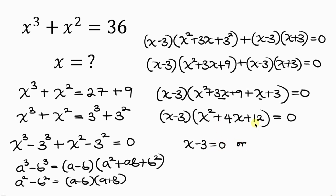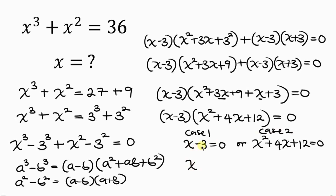We now have two cases. Case 1: x minus 3 equals 0, which gives x equals 3. This is easy to identify since we have the sum of a cube and a square on both sides, so we can easily identify x as 3. But that is not the only solution.